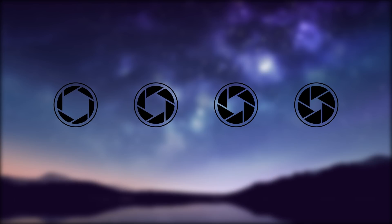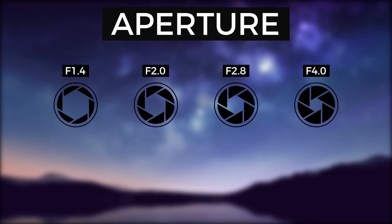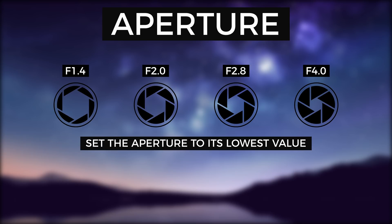For the aperture setting, use the smallest F number your lens will allow, although aperture values above 2.8 will make the Milky Way harder to photograph. As the F number decreases, the aperture inside the lens opens up, letting in more light.